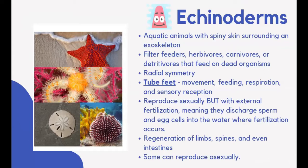Sea stars, brittle stars, sea urchins, and sand dollars are all echinoderms. Echinoderms are aquatic animals with spiny skin surrounding an exoskeleton. They are marine species found usually on seafloors. Echinoderms can be filter feeders, herbivores, carnivores, or detritivores that feed on dead organisms. They have radial symmetry, meaning their body parts are arranged around a single axis. Echinoderms have tube feet with suction cup-like ends used in movement, feeding, respiration, and sensory reception.